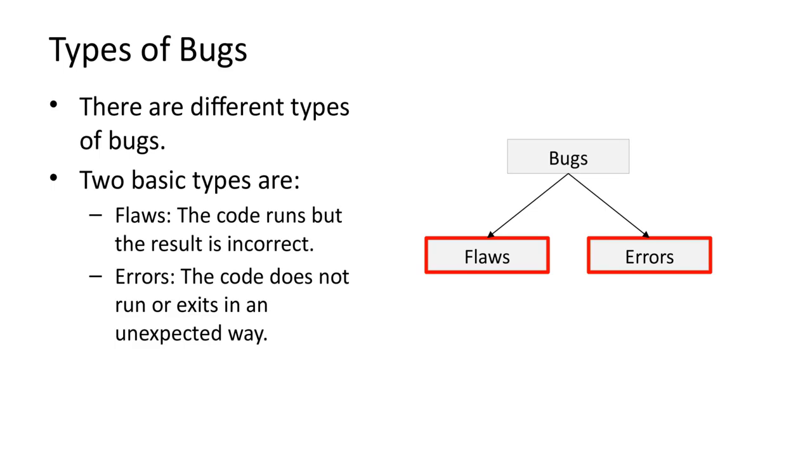The two main types of bugs are flaws and errors. When there is a flaw in your code, the code still runs and still produces some result. But due to some flaw in the logic of the algorithm, the result is incorrect.